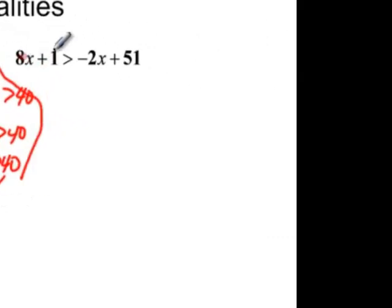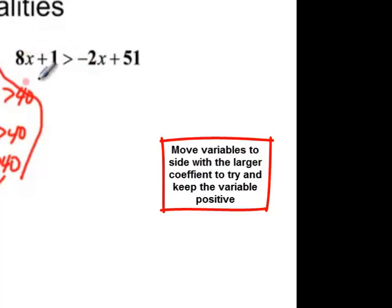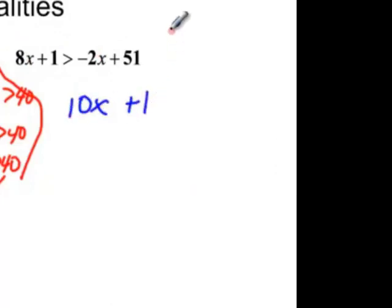Here I have variables on both sides of the inequality and I also have constants on both sides of the inequality. So I'm going to have to move across my inequality several times. And it doesn't matter if I move x or I move constant first. So I'm purposely going to move the x first trying to keep it positive. Now I see that 8x is bigger than negative 2x so I want to move everything over to this 8x side. So I add 2x to both sides and that will give me 10x and I still have one on this side and that's greater than 51.